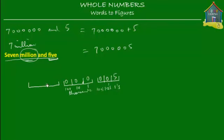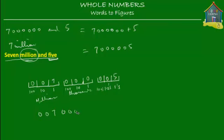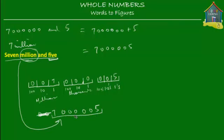Then the last three bits are the millions — one millions, ten millions, and hundred millions. For one millions you have seven; for ten millions you don't have anything; for hundred millions you don't have anything. So seven million and five gives you: zero, zero, seven, zero, zero, zero, zero, zero, five. The first two leading zeros can be dropped, so the number is seven followed by five zeros and then the digit five.